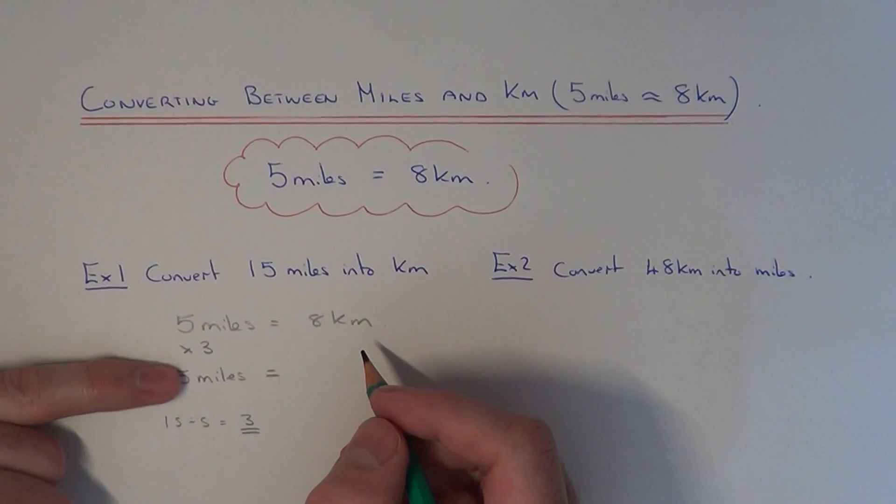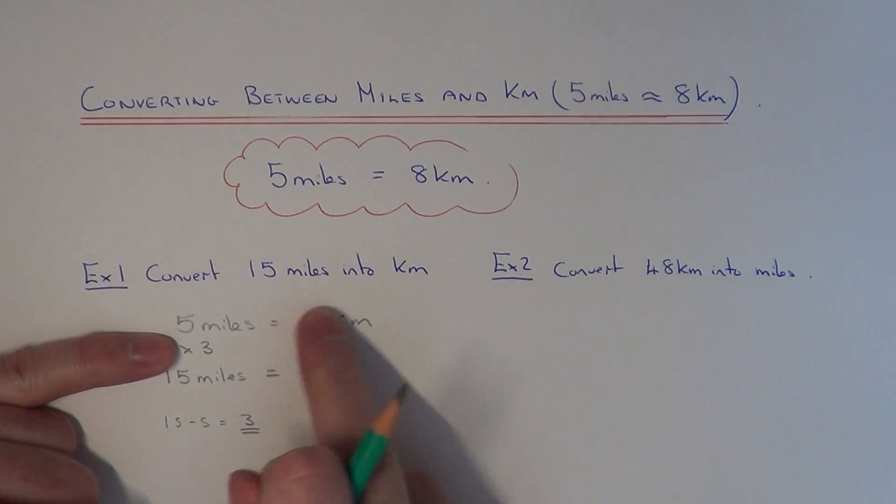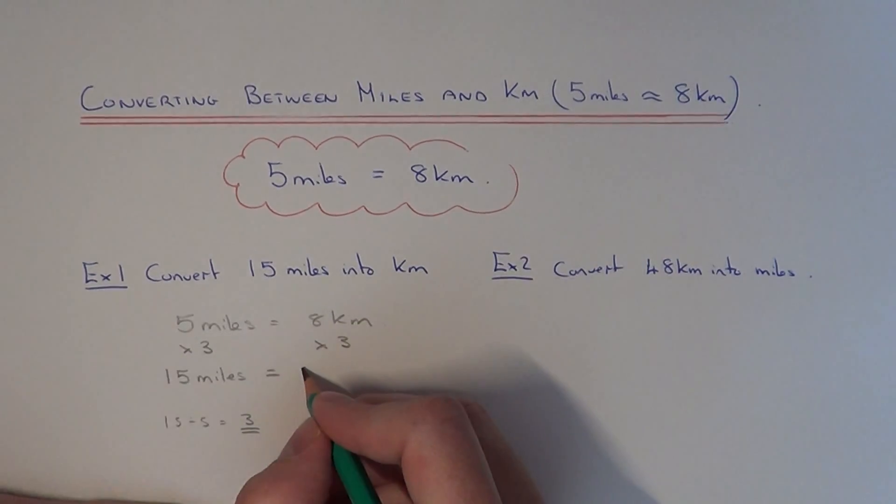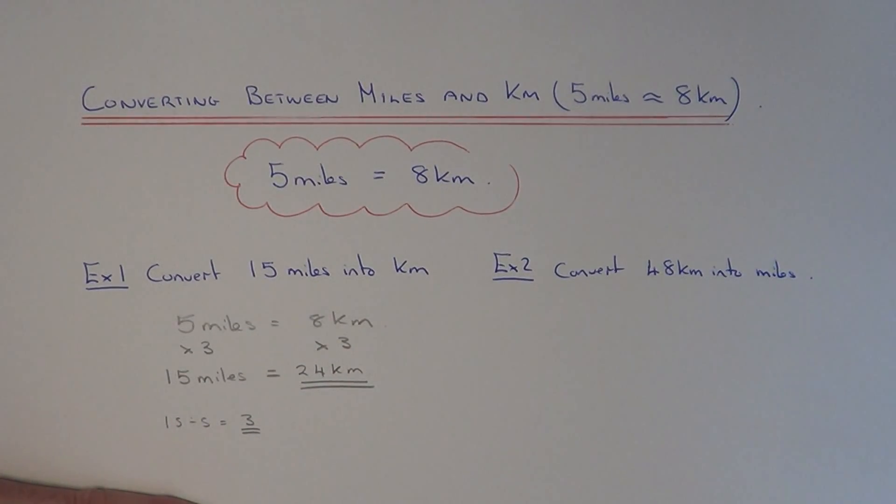If we're multiplying this side by 3, we also need to multiply the other side by 3. So 8 times 3 is 24 kilometers. That's our final answer.